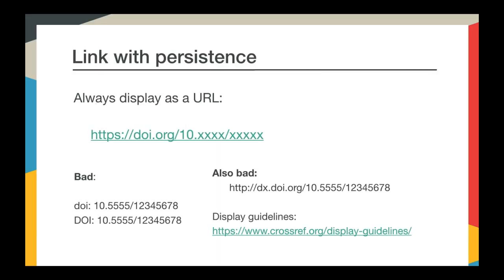What exactly is involved in reference linking? We encourage you to use persistent identifiers as links wherever possible — in your tables of contents, new publication alerts, metadata feeds, and of course in your reference links. Wherever you display DOIs, you must comply with our DOI display guidelines. We've recently issued new guidelines, so if you're a new member you can just start fresh with them. The main point is that a DOI should always be displayed as a URL using the form https://doi.org/ followed by the DOI.